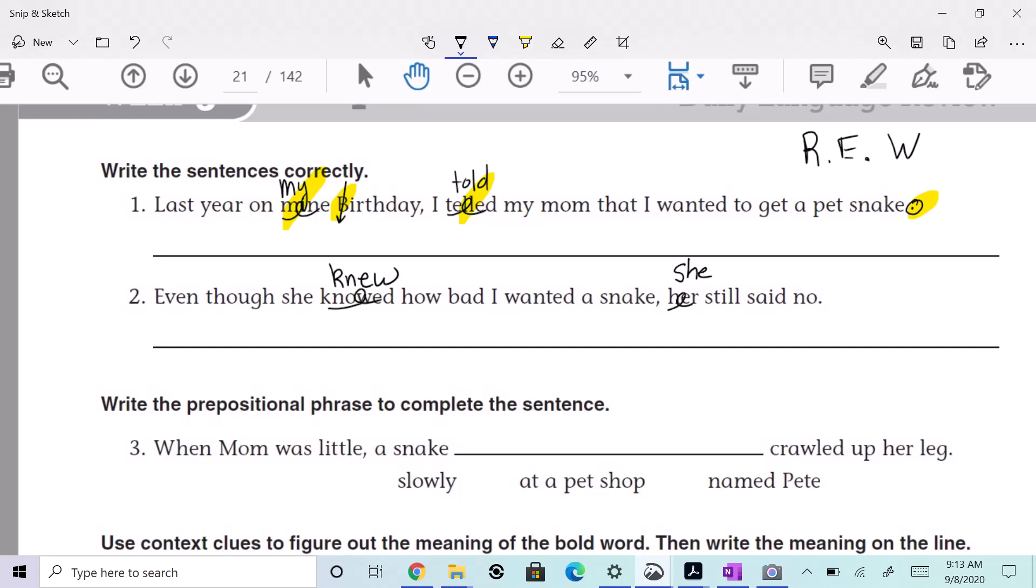She still said no. One more thing I feel like we need to fix. Even though she knew how bad I wanted a snake. That's not right. What should that be? We need to add a suffix to the word bad, and that suffix is L-Y. Badly, badly. Very good. Even though